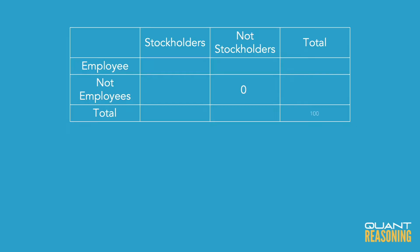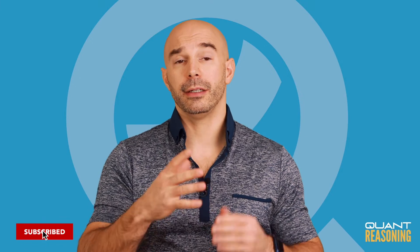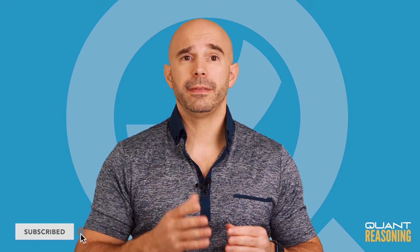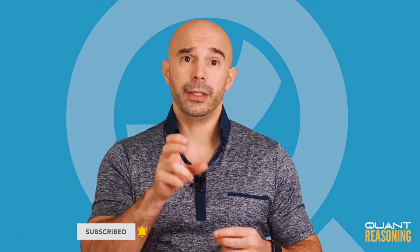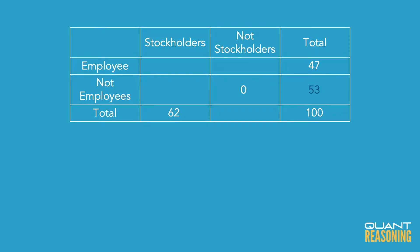Now, this question is in the world of percents, so I'm just going to use 100 for my total total, which means I can now put 47 for all of the people who are employees and 62 for all of the people who are stockholders. Since I know there are 47 employees and 100 total, there must be 53 people who are not employees. And thanks to the fact that I put a zero in the neither-nor cell, I can immediately see that the number of stockholders who are not employees must also be 53.